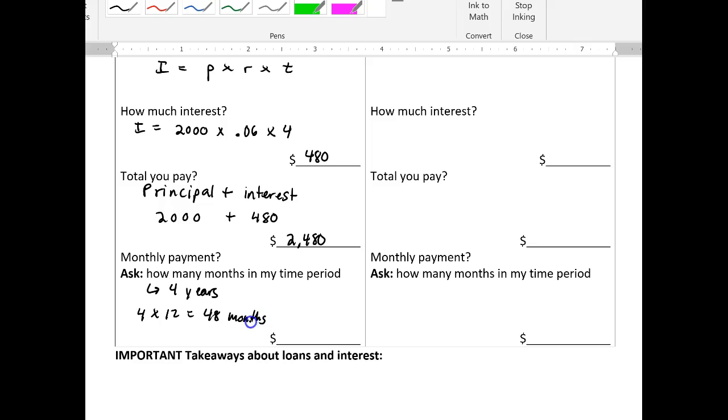which means we have 48 months. So to figure out my monthly payment, I'm just going to take my total and divide it by my months. So 2,480 divided by 48. When I do that, I get 51.6666. So I'll just round to $51.67. That's how much I'll pay back the bank each month for 48 months.